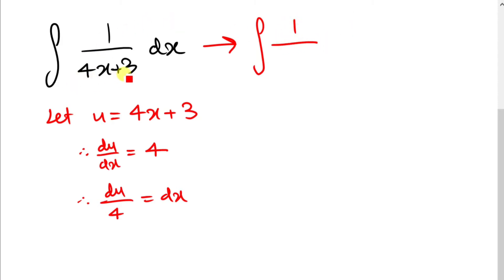We're going to replace 4x plus 3 by the u because that's what we called it. And now we're going to replace dx by du over 4. So now we have everything in terms of u.